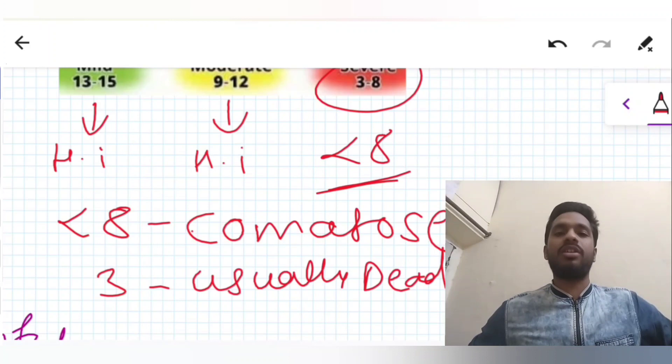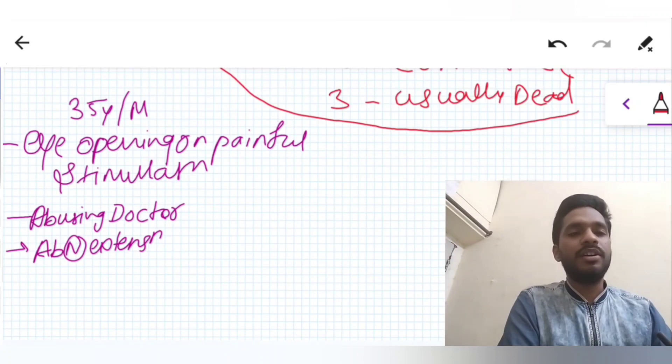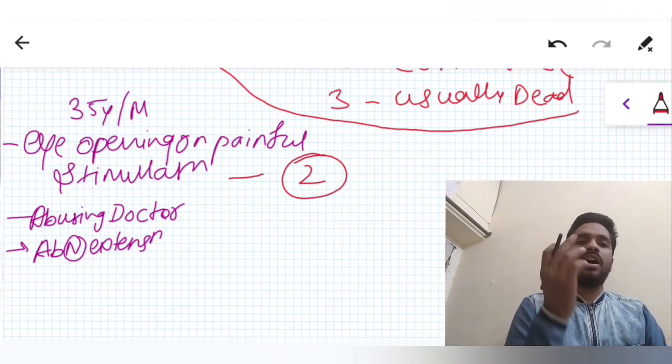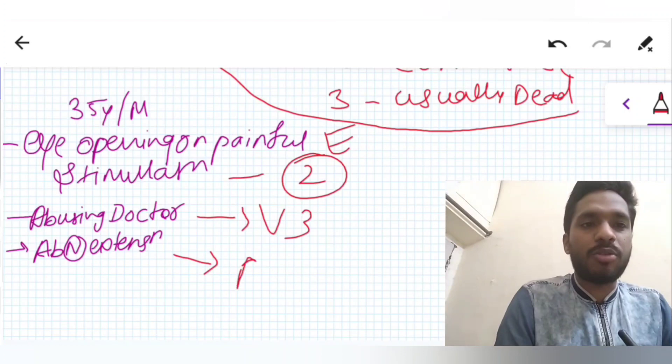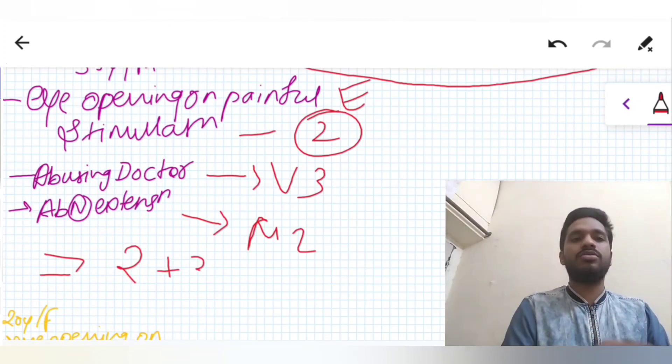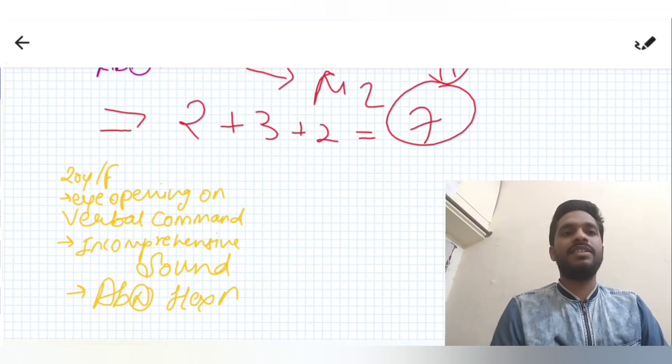Let's do some practice questions. A 35-year-old male: his eye is opening on painful stimulation — E2; he is abusing the doctor, that is inappropriate words — V3; and abnormal extension — M2. So 2 plus 3 plus 2 equals a total GCS of 7.